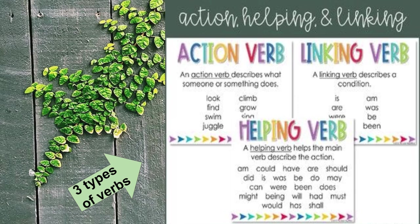A helping verb helps the main verb describe the action. Examples: am, could, have, are, should, did, is, was, be, do, may, can, were, been, does, might, being, will, had, must, would, has, and show. As you can see, some linking verbs also appear in the helping verb list, meaning they are interchangeable.